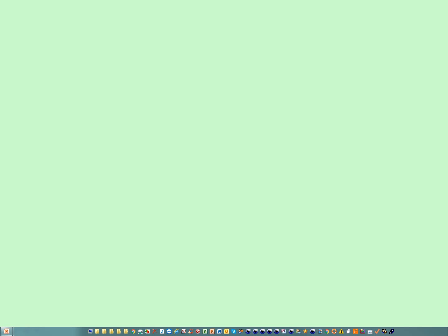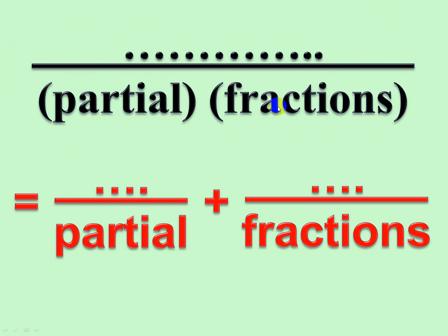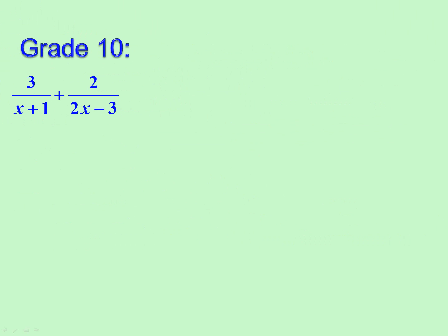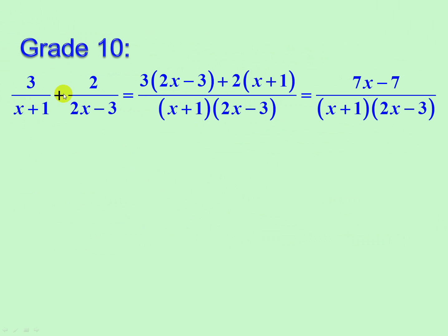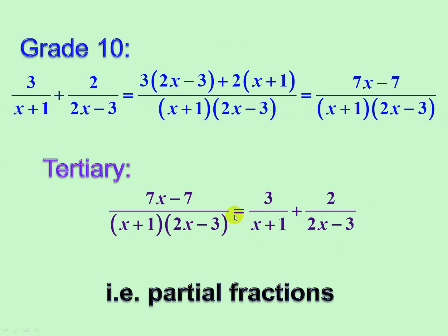Partial fractions — type one of three that this video series will be covering. A single fraction with two denominators becomes two fractions each with one denominator. In grade 10 we worked our way up to take two fractions combined with a common denominator to get to one. Now in tertiary education you're going to be expected to go the other way. This is referred to as decomposition into partial fractions.